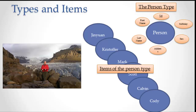The type is the rules. The type says anything that has an ID, a name, an address, a location, and a sex — that we're going to call a person. If it doesn't have those things, then it's not a person. Those are the rules. And then when you apply those rules, when you put those rules into action, you have items.